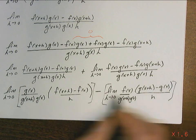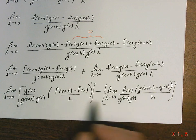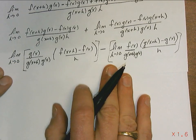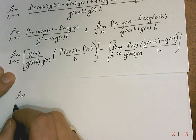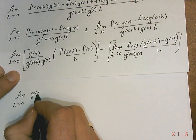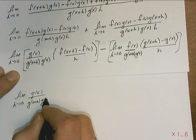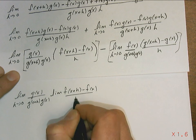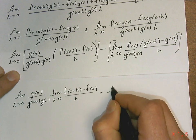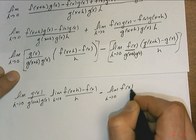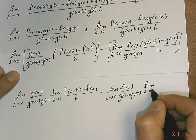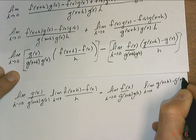Now we can see what we have. We want to bring the limit over to each part. So the next line is going to be: the limit as h approaches 0 of g of x over g of x plus h times g of x, times the limit as h approaches 0 of f of x plus h minus f of x over h, minus the limit as h approaches 0 of f of x over g of x plus h times g of x, times the limit as h approaches 0 of g of x plus h minus g of x over h.